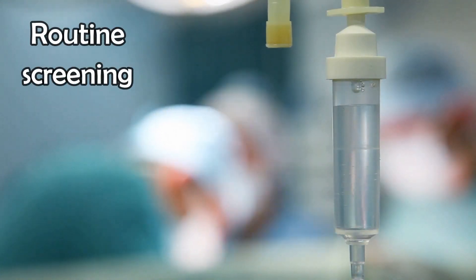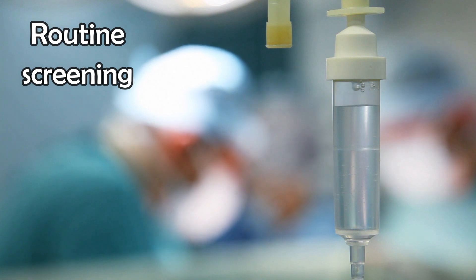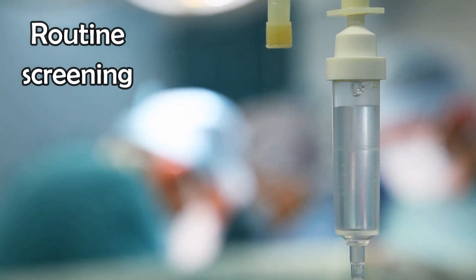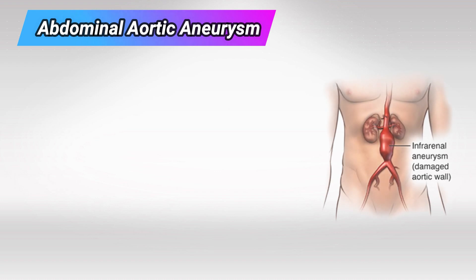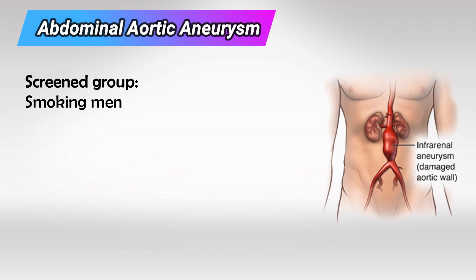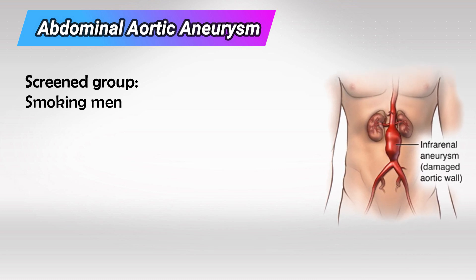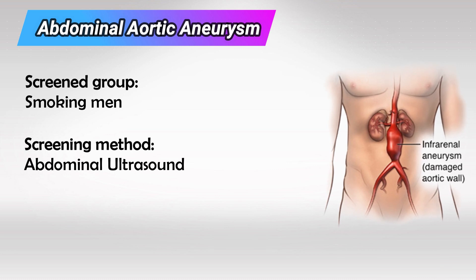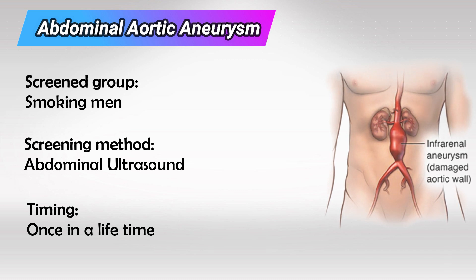Welcome back. In this video I've collected all disease screening for your Step 1 exam. Starting with abdominal aortic aneurysm, the screened group would be men who ever smoked. This excludes men who do not or have never smoked, and women. The screening method is ultrasound of their abdomen, and it's done only once in their lifetime.